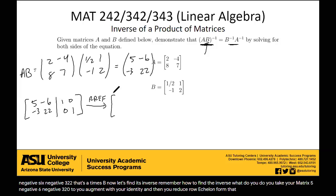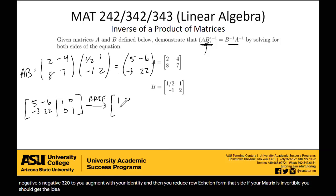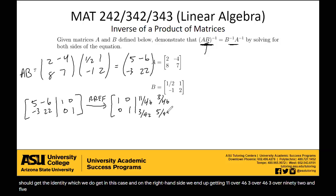And on the left-hand side, if your matrix is invertible, you should get the identity, which we do get in this case. And on the right-hand side, we end up getting 11 over 46, 3 over 46, 3 over 92, and 5 over 92.